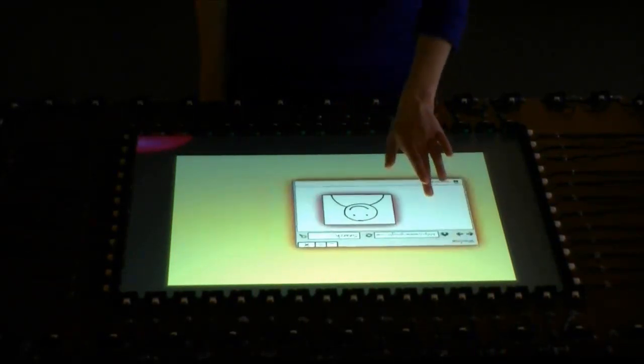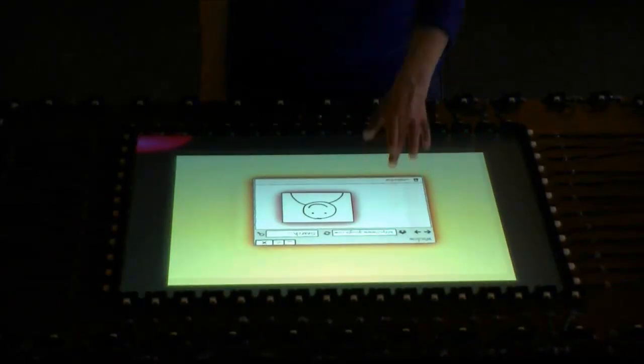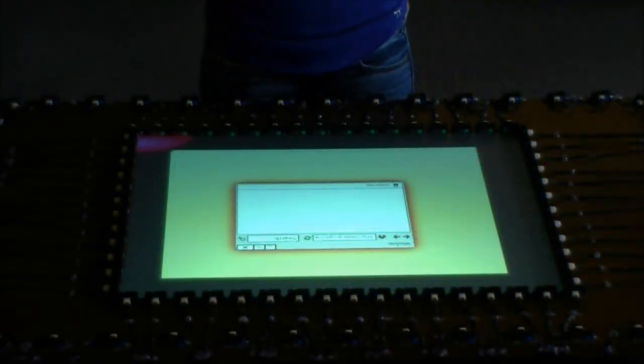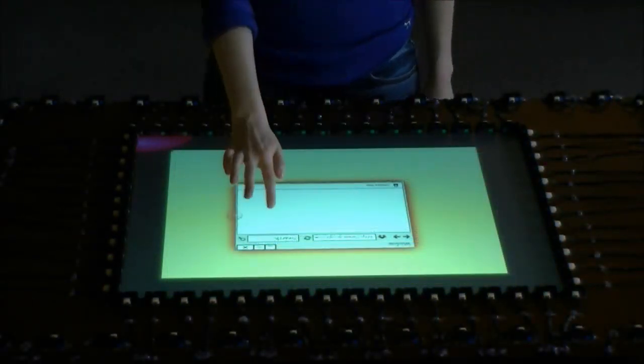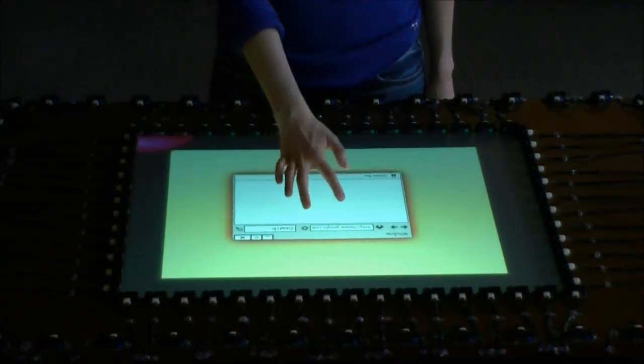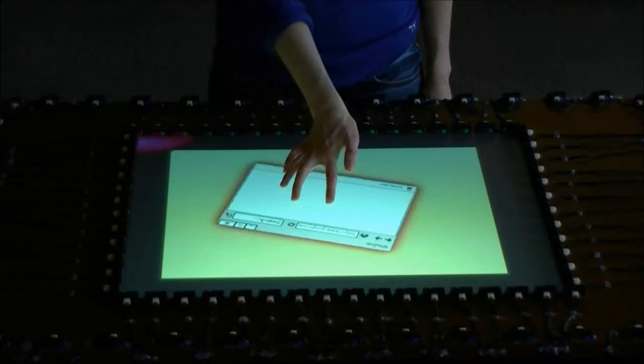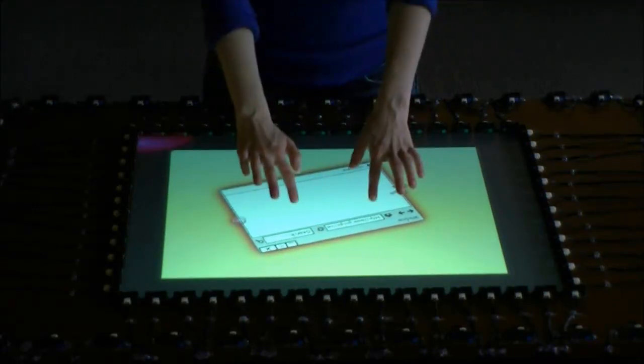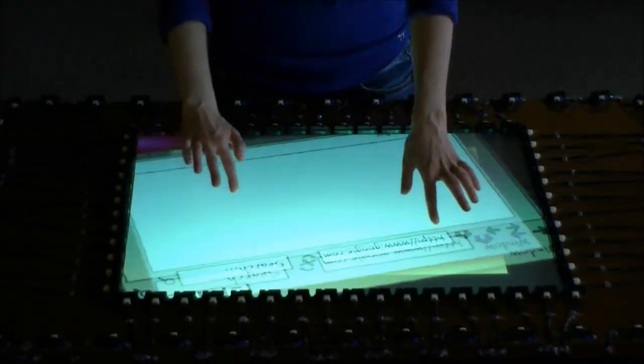To increase the precision of physical manipulations, ProxySketch differentiates manipulation transforms based on which hand is used. Here, when a user touches a component with one finger, they can move it. When the user touches the component using two fingers from the same hand, they can rotate it. If the user touches the component with one finger from each hand, they can scale the component.